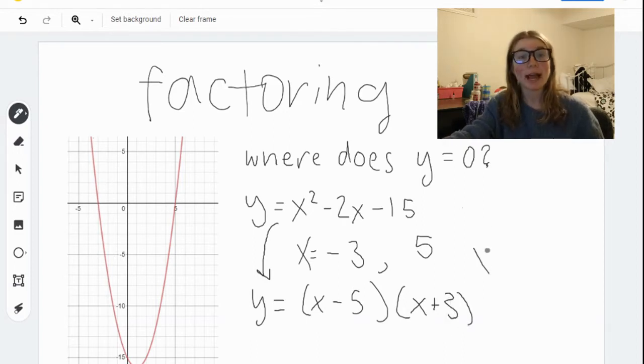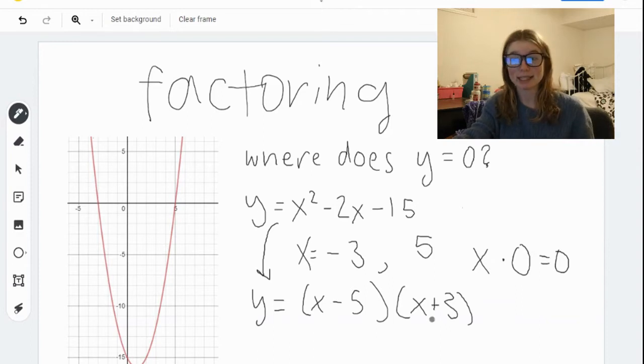You can take this equation and put it into the form y equals x minus 5 times x plus 3. Now, we know that any number multiplied by 0 is equal to 0. So if we change this equation into two factors, two things being multiplied together, then we can say if any one of them is 0, the function will evaluate to 0.